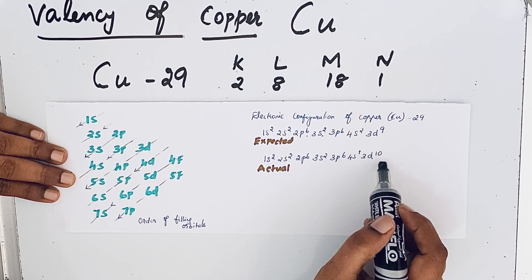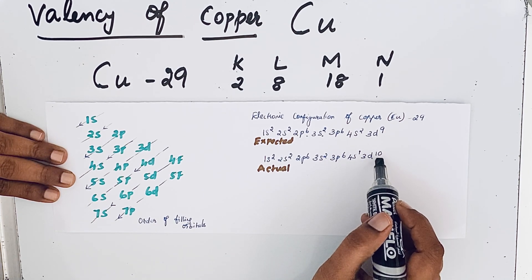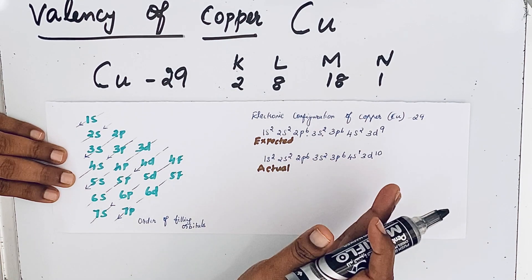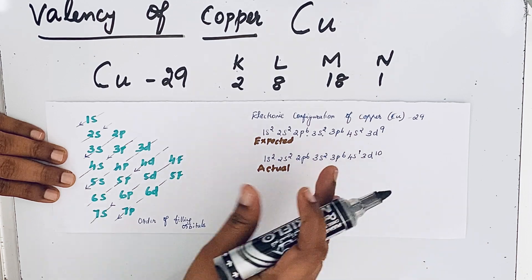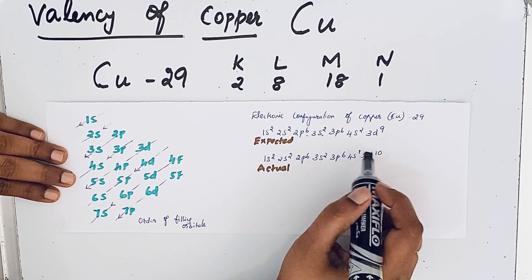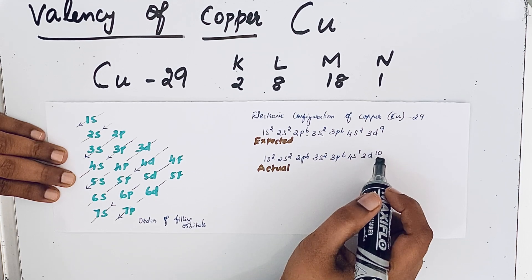In that configuration, we have completely filled orbitals. Actually, half-filled and completely filled orbitals are stable. To give that extra stability, the electron from s orbital shifted to d orbital. Due to the less difference in energy, this shifting is possible.